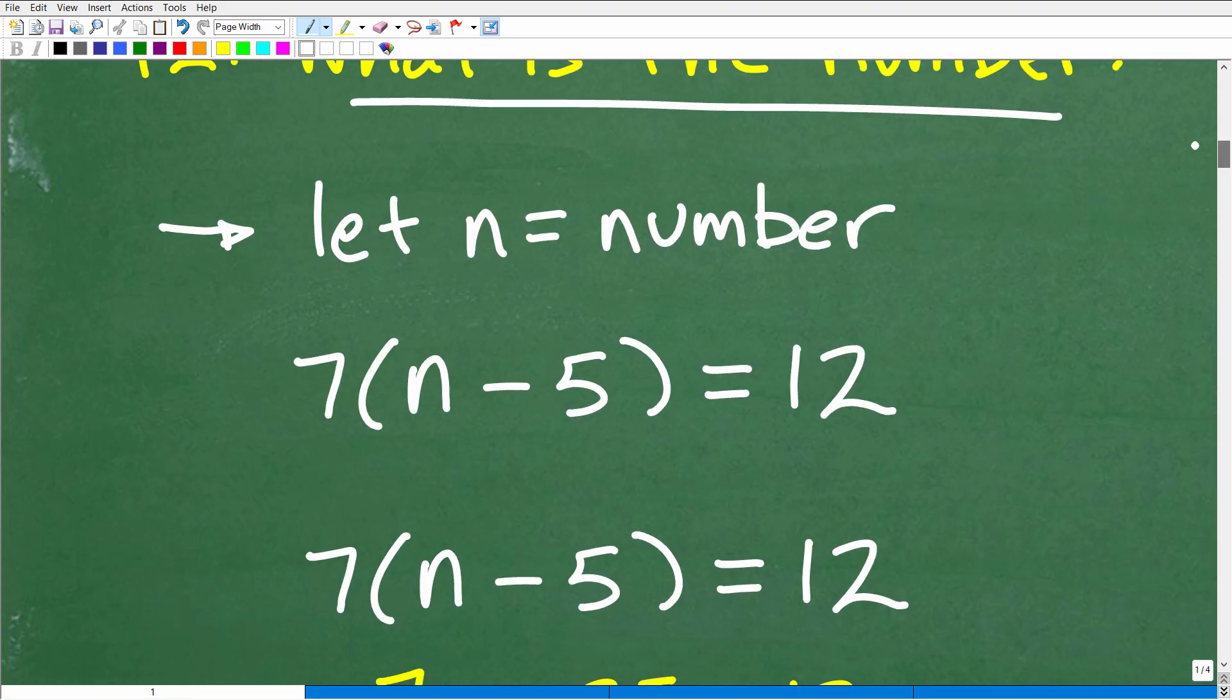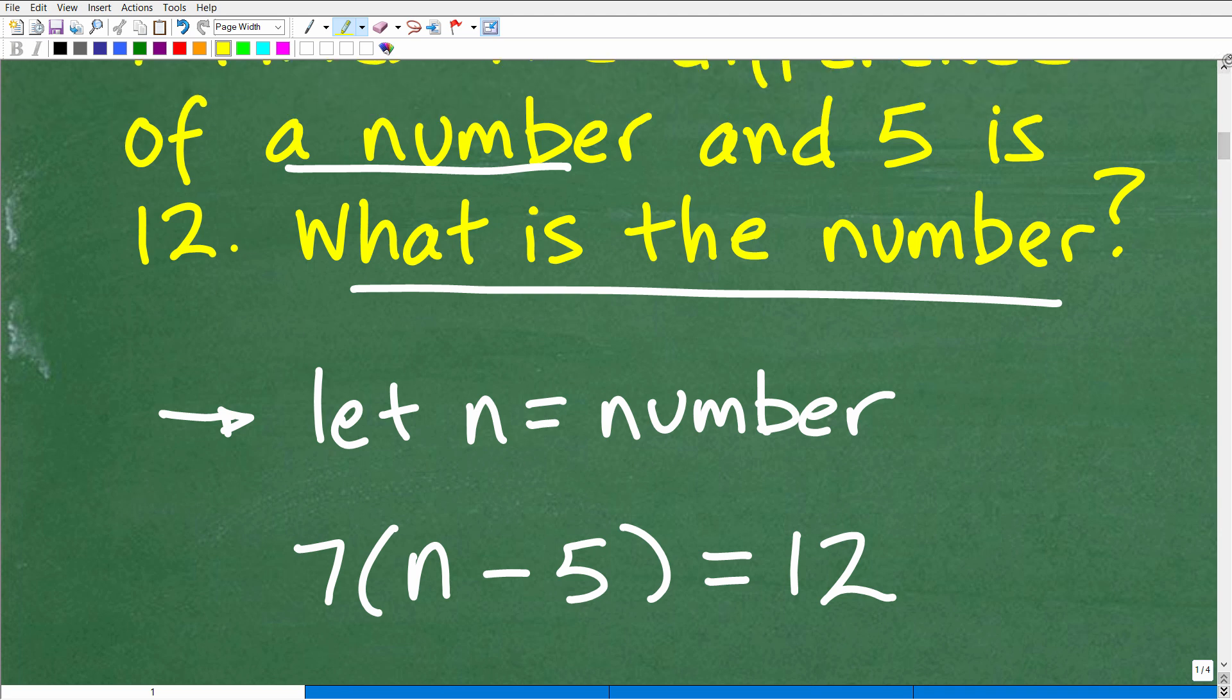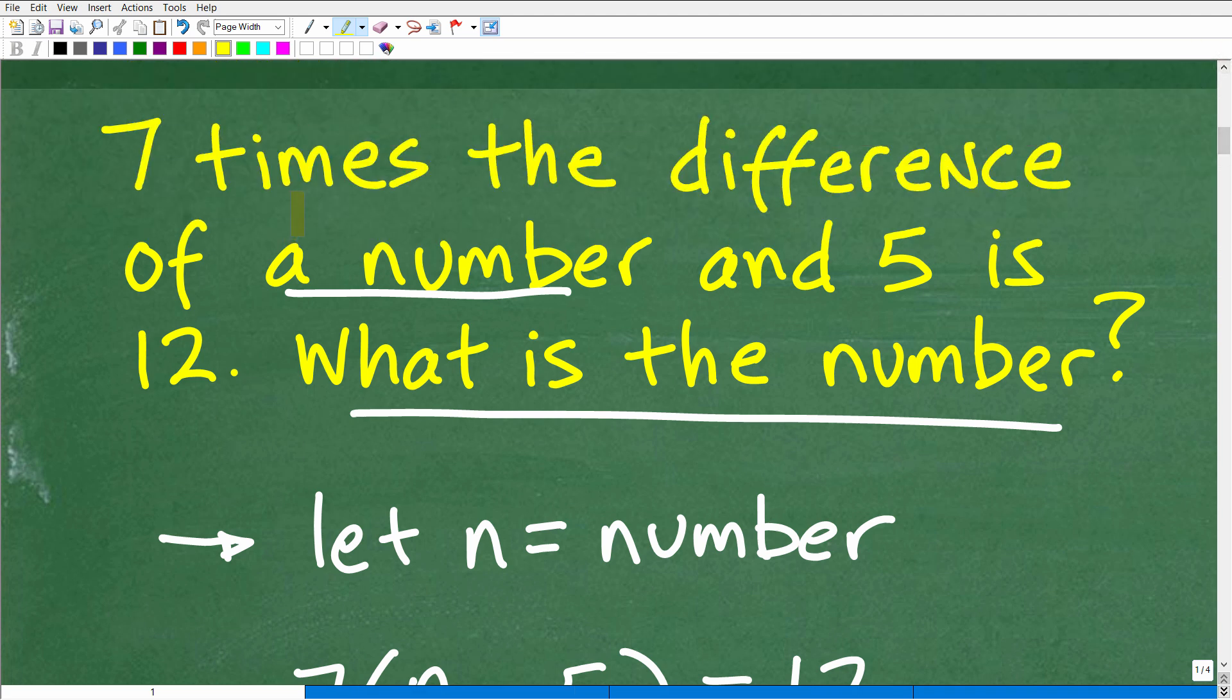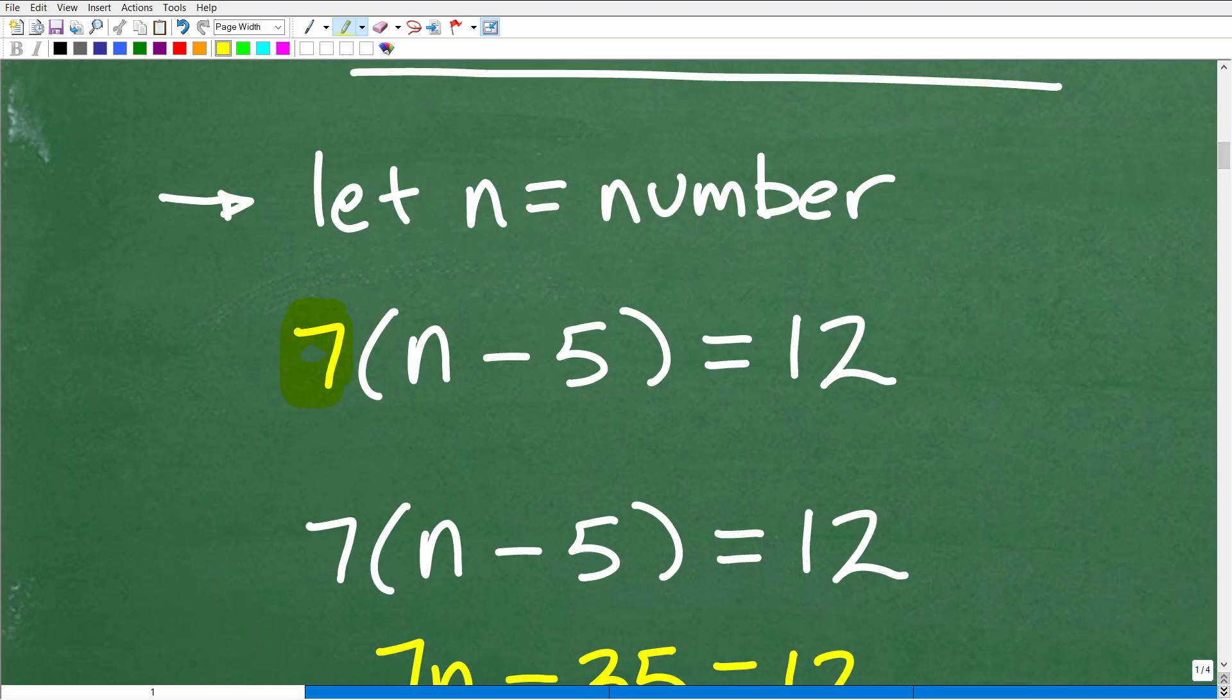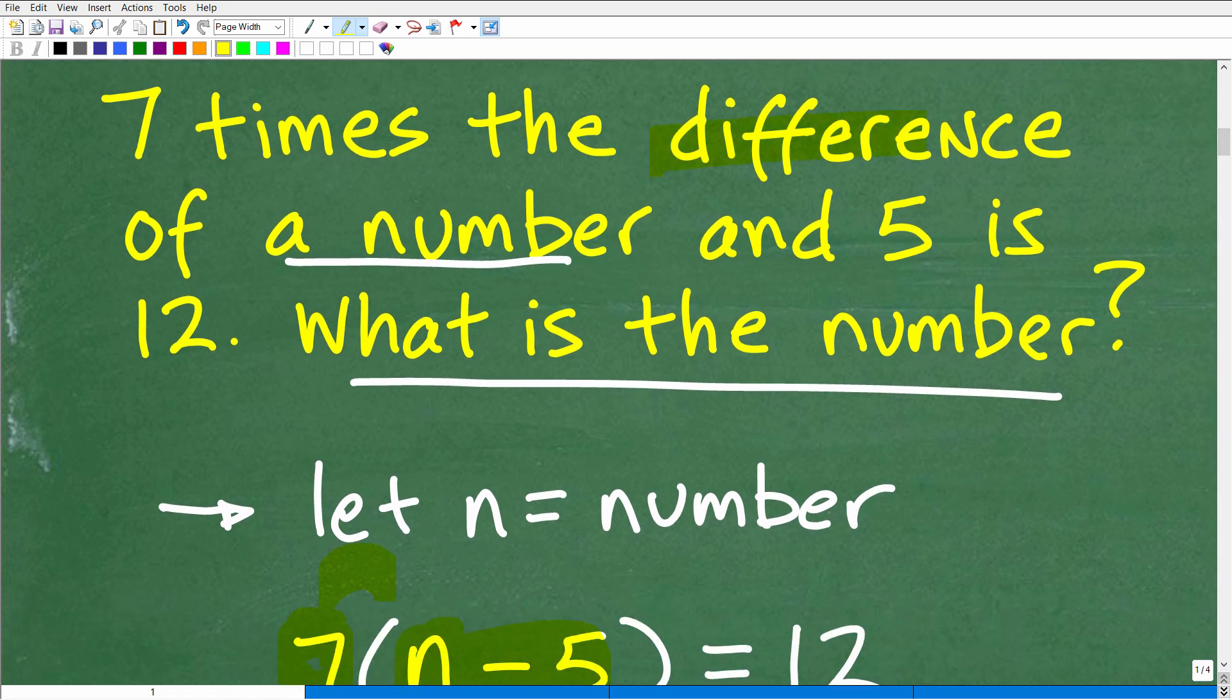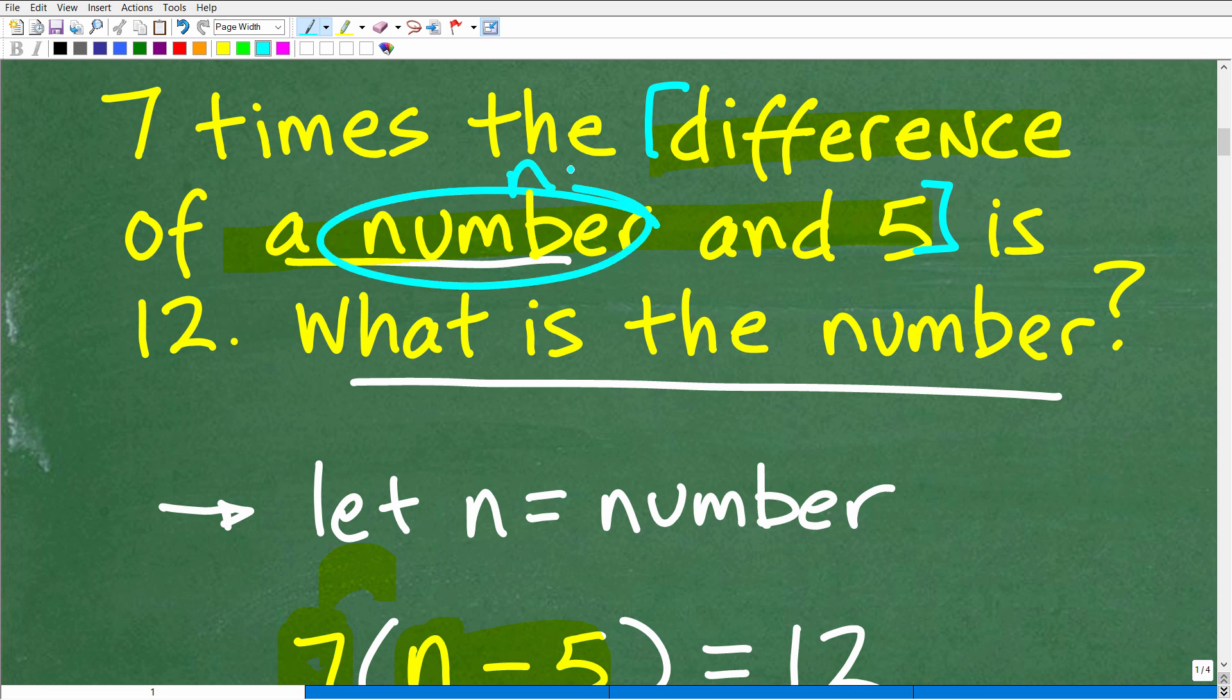So we're going to be dealing with an unknown quantity here. So that means we're going to want to construct an equation. And we can construct an equation because we have the word is here. We're going to translate this sentence into an actual algebraic sentence or variable equation. So let's go ahead and get into this now. We're going to let n equal the number. You want to read your word problems more than once. You want to make sure you understand the question. So we're going to let n is equal to the number. Always get in the habit of defining your variables.